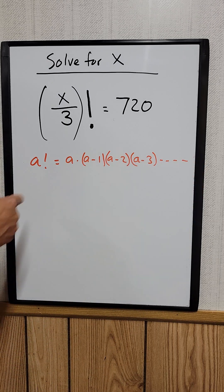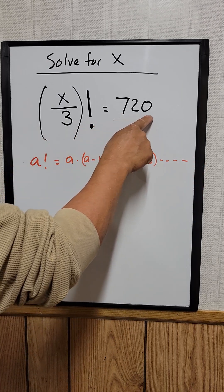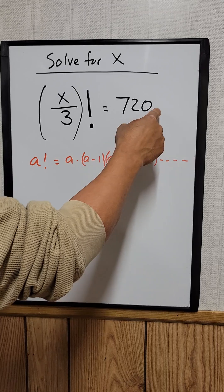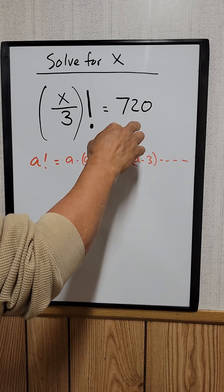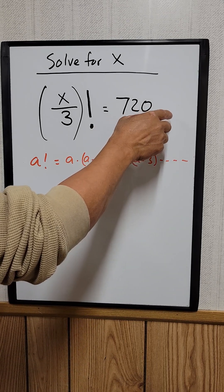Now for this problem, we need to find the 720. What is the 720 equal to? What factorial is 720 equal to?